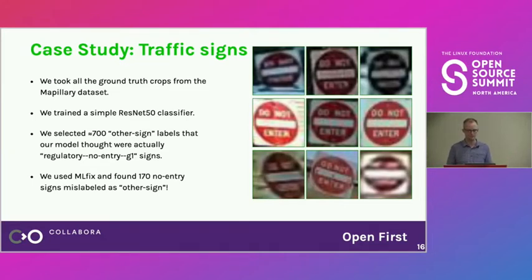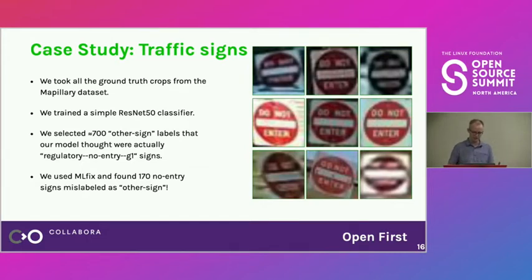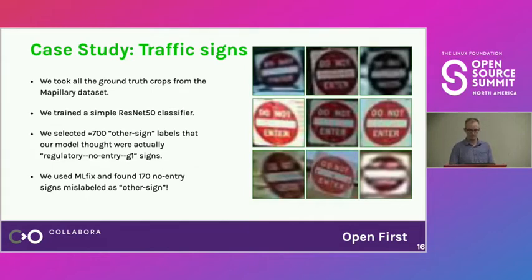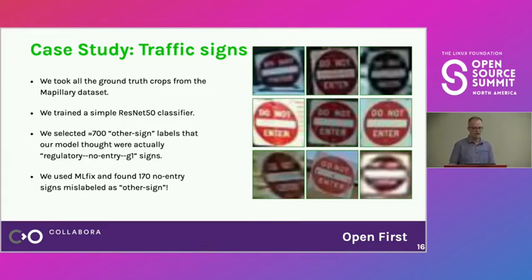About 90% of all traffic signs are "other signs." We took all these ground truth crops from the Mapillary dataset, trained a simple classifier, then selected 700 items supposed to be "other signs" that our model believed were actually "regulatory no entry" signs. Among those 700 images, 170 were actually mislabeled no-entry signs. So the 1% error estimate is actually quite low.